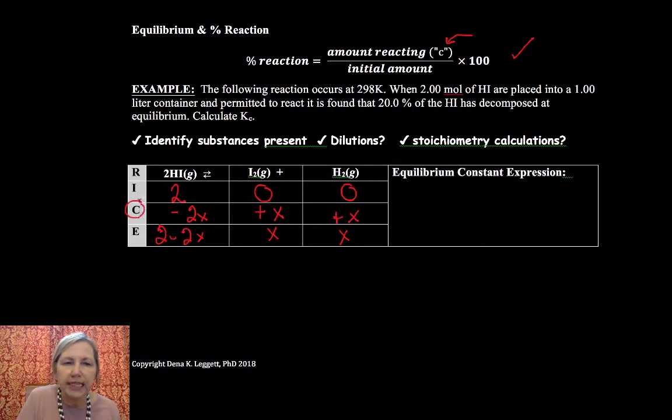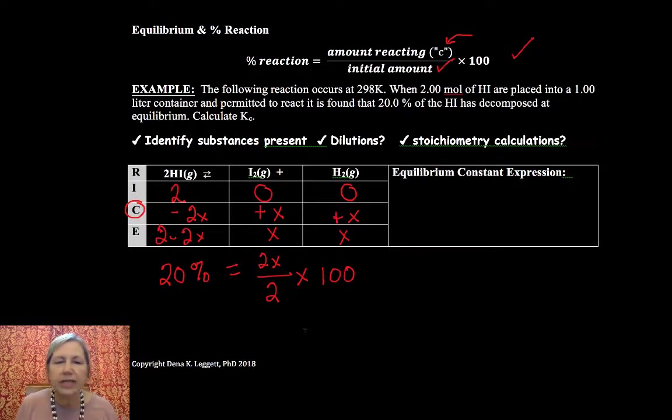Now the percent that a reaction proceeds is the amount that reacted, which in our framework is your C in your RICE or your change, divided by your initial amount times 100. So the problem tells me that 20% reacted. Well, my change was 2x and I started with 2, so 2x over 2 times 100 is 20%. Some of you are going to see this intuitively and you will know how to solve the problem much more quickly. I'm doing this in a little bit more detail to help people out for those harder questions.